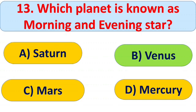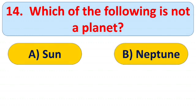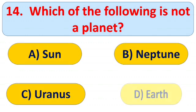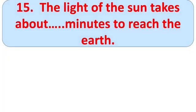Next question: which of the following is not a planet? Options: A) Sun, B) Neptune, C) Uranus, and D) Earth. The right answer is A) Sun. Earth, Uranus, and Neptune are all planets, but the Sun is a star.